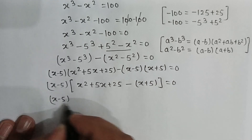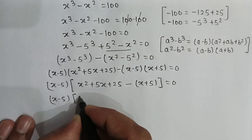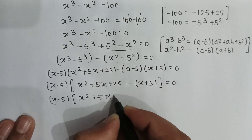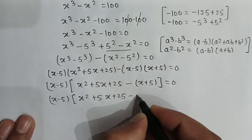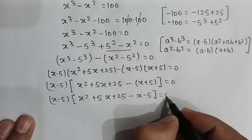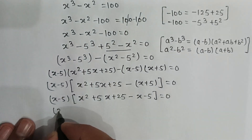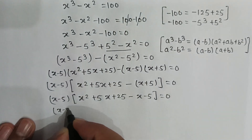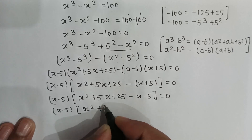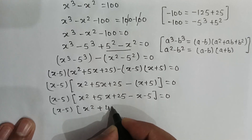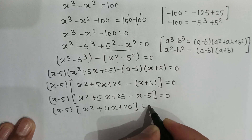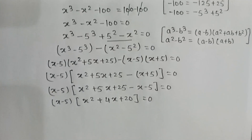So it will be x minus 5, multiplied by x square plus 5x plus 25, minus x minus 5, equals 0. We can factor out (x minus 5) to get x minus 5 times x square plus 4x plus 20 is equal to 0.